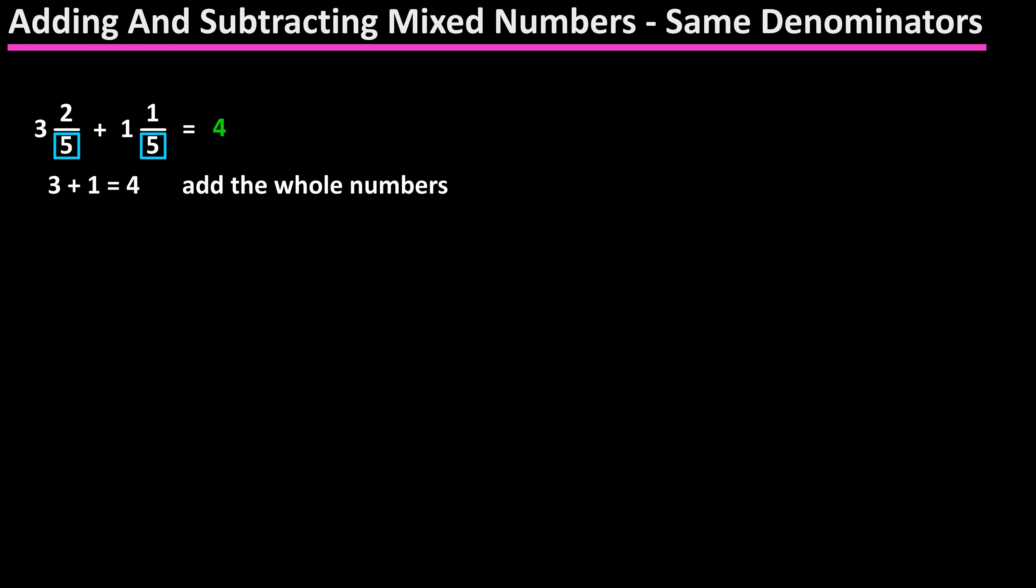and then as you would normally do with like fractions, add the numerators together, 2 plus 1, which gives us 3, and keep the denominator of 5, so we have 4 and 3 over 5 as the final answer.